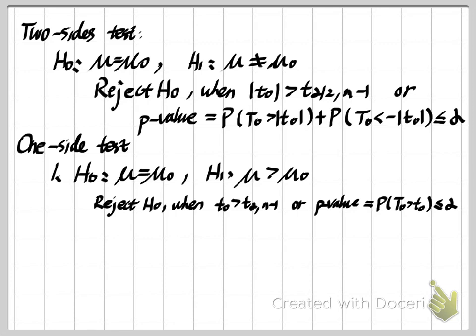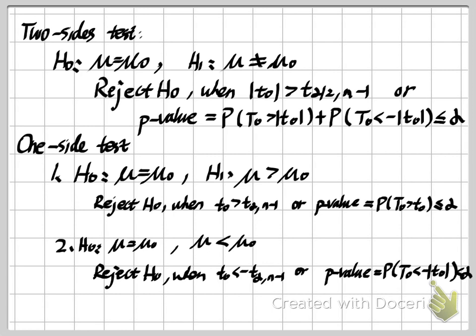The other one-sided case is when H₁: μ < μ₀. We reject H₀ if t₀ < −t_{α, n−1}. Because it is still a one-sided test, we use t_{α}. The p-value is P(T₀ < −|t₀|), and if the p-value ≤ α, we reject H₀. This covers when to reject H₀ for both two-sided and one-sided tests. Now let's look at some examples.